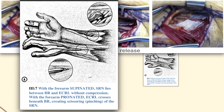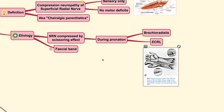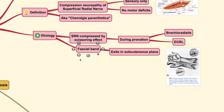During pronation, the SRN is pinched by two different tendons — the brachioradialis and the extensor carpi radialis longus. When you twist your wrist around during pronation movement, this nerve gets entrapped between these two tendons. It is like a pinching effect on the nerve, and that is why it causes this kind of condition.